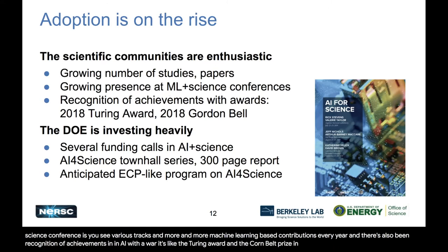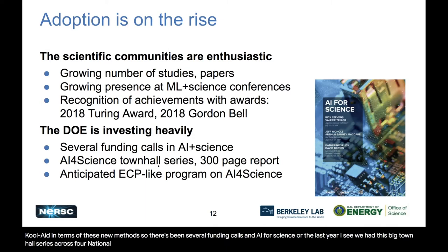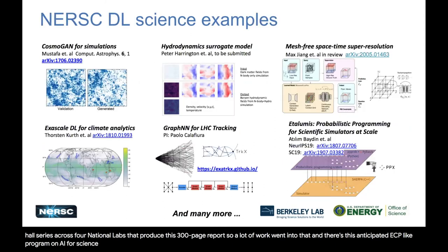There's been recognition of achievements in AI with awards like the Turing Award and Gordon Bell Prize in 2018. The DOE is also embracing these new methods — there have been several funding calls in AI for science over the last year, a big town hall series across four national labs that produced a 300-page report, and an anticipated ECP-like program on AI for science.